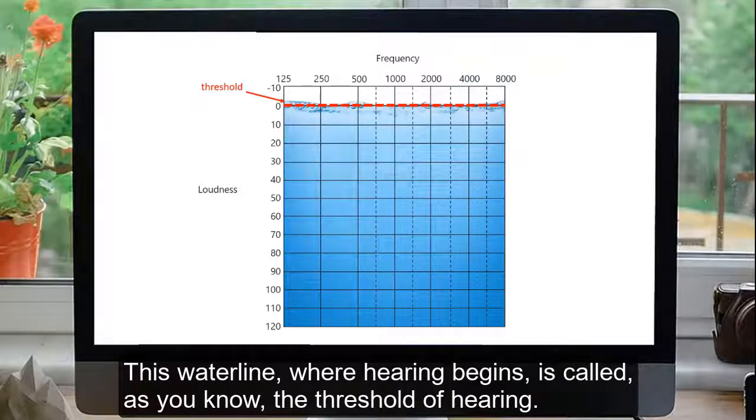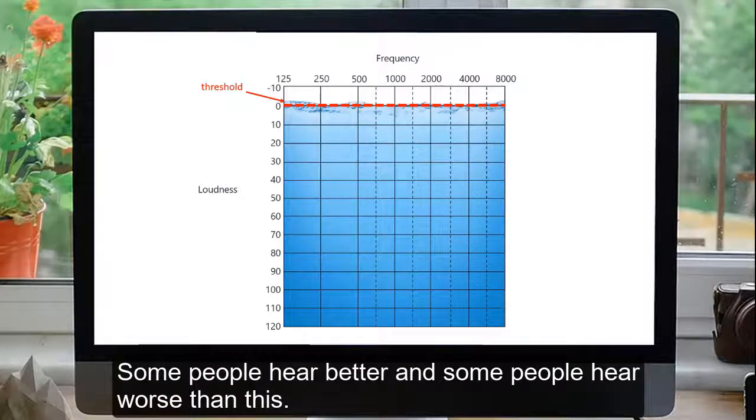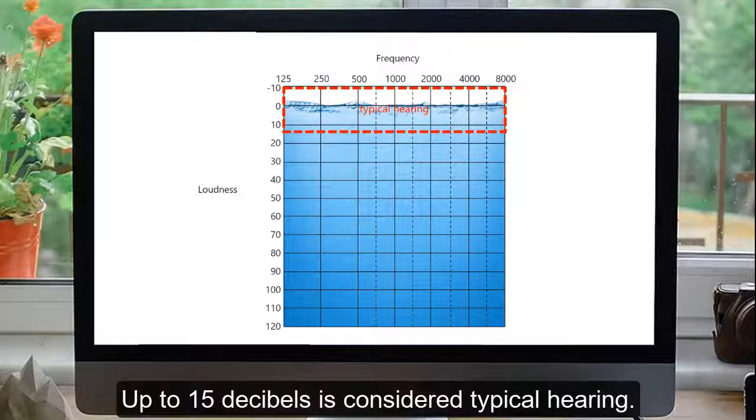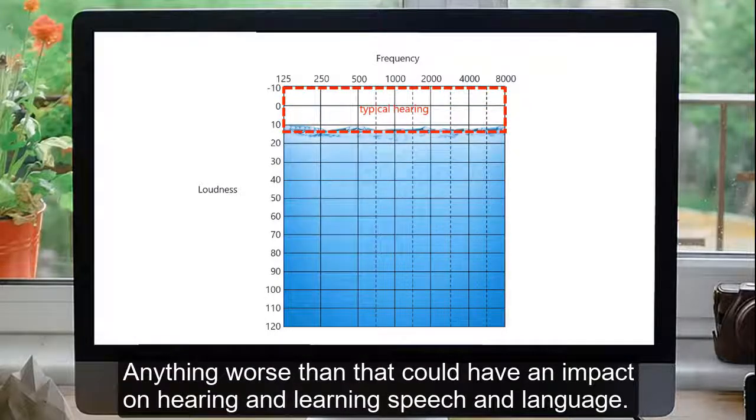Where most people can just begin to hear the softest sounds is here at the waterline. This waterline where hearing begins is called, as you know, the threshold of hearing. Anything above the water is too soft to hear. Some people hear better, and some people hear worse than this. Up to 15 decibels is considered typical hearing. Anything worse than that could have an impact on hearing and learning speech and language.